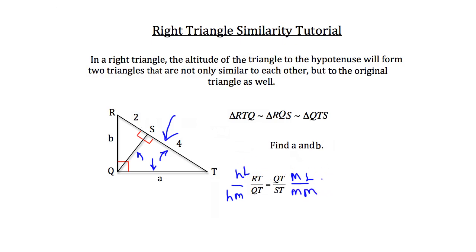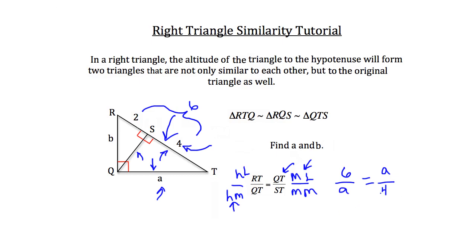Now we can put in the numbers. Segment RT is the sum of 2 plus 4, which is 6. So we have 6 over A equals A over 4. Using the cross product property rule, 6 times 4 is 24, and A times A is A squared. We take the square root of both sides of the equation to get A alone, and we get A is equal to 2 root 6.